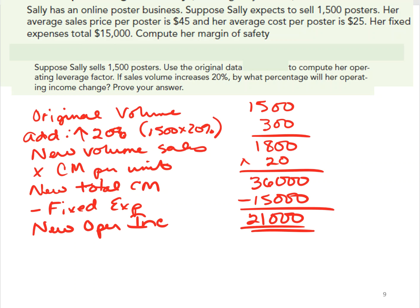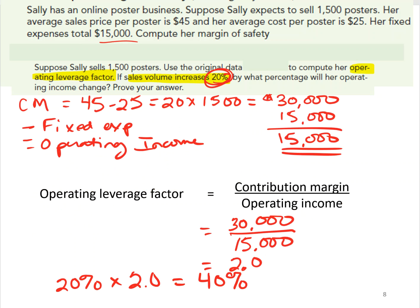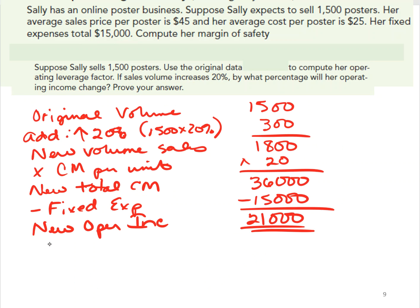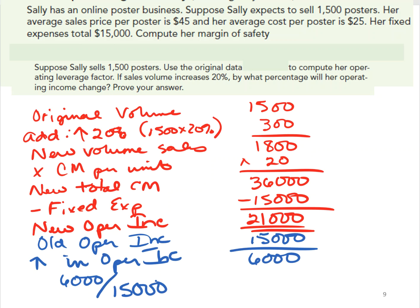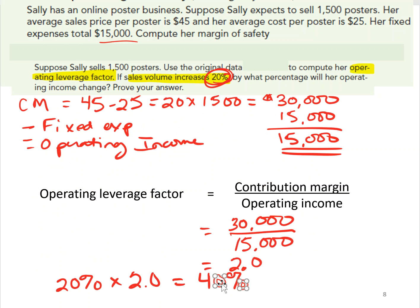Our previous operating income was $15,000, so the difference is a $6,000 increase in operating income. Taking that $6,000 increase divided by the old operating income of $15,000 gives exactly a 40% change — which is precisely what we anticipated. That confirms our operating leverage calculation.